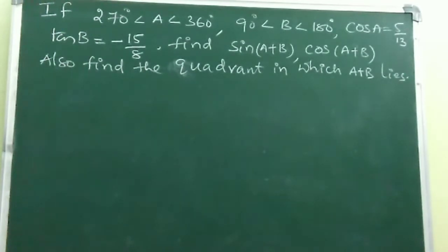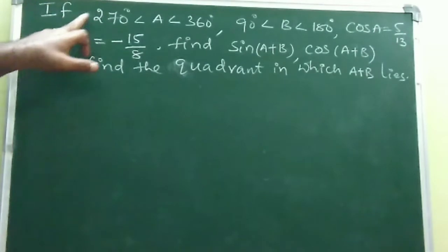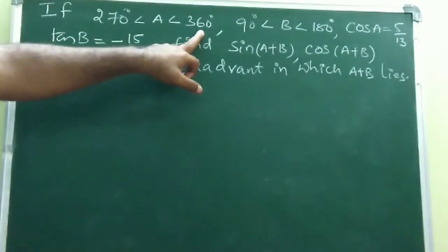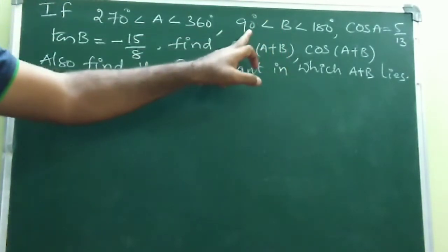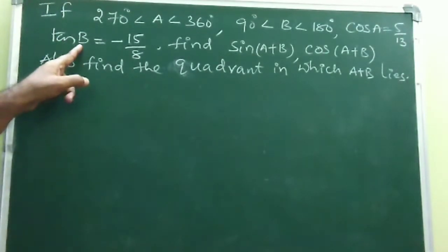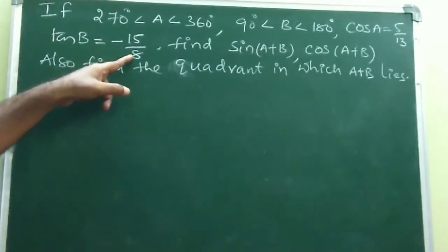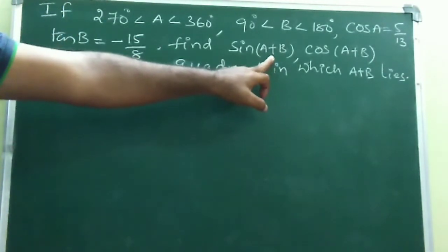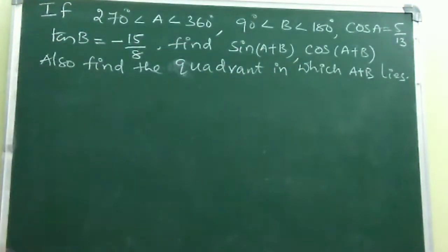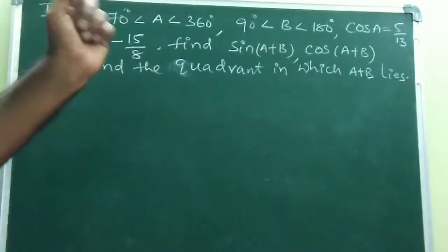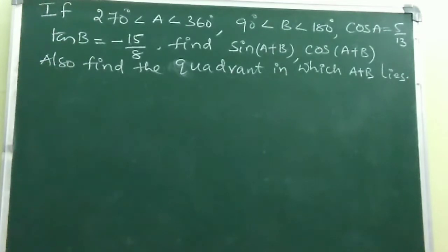Most important model: if A lies between 270° and 360°, and B lies between 90° and 180°, with cos A = 5/13 and tan B = -15/8, find sin(A+B), cos(A+B), and the quadrant in which A+B lies.